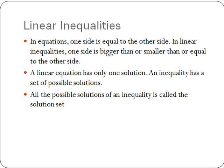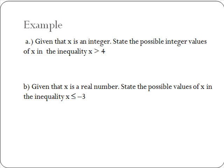Now we'll try some examples of linear inequalities. In part A, given that x is an integer, we're asked to state the possible integer values of x in the inequality x is greater than 4. Remember, integers are all the positive and negative whole numbers. So x greater than 4 means any integer greater than 4 makes the inequality true. We could replace x with the numbers 5, 6, 7, 8, and so on to infinity.